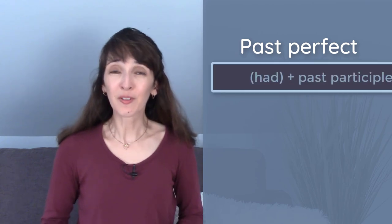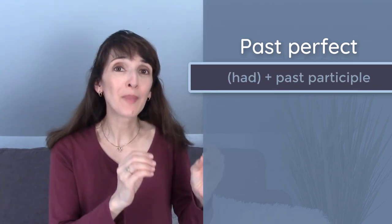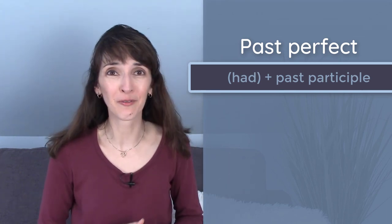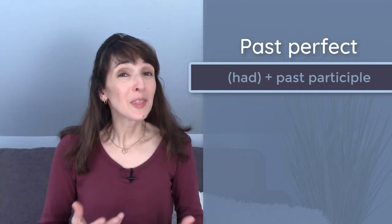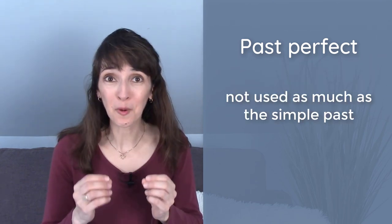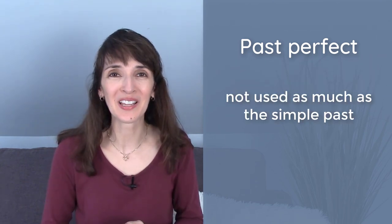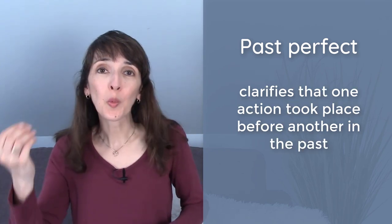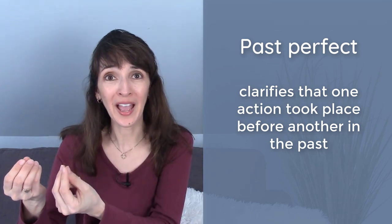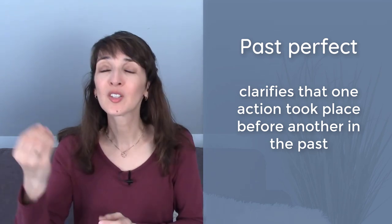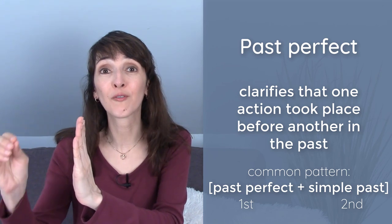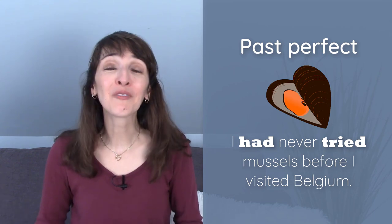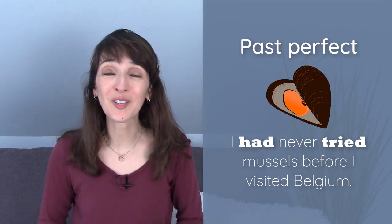The past perfect uses had plus the past participle, the -ed form or that third form of an irregular verb. The past perfect isn't used as much as the simple past in American English, but we can use the past perfect to clarify that one action took place before another action in the past. So the past perfect refers to the first of two past actions. I had never tried mussels before I visited Belgium.